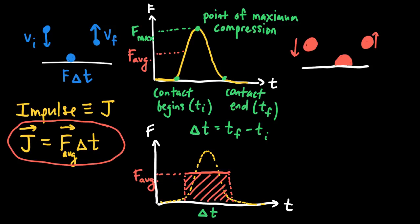The area of that red rectangle is equal to the impulse that acts on the object from the floor. The impulse delivered to an object can be found from the area under the curve of a force versus time graph. In practice it might be difficult to find the area under the actual curve, so if we know the average force over the time interval we can determine the impulse more easily, or we break the graph into chunks whose areas we can compute.